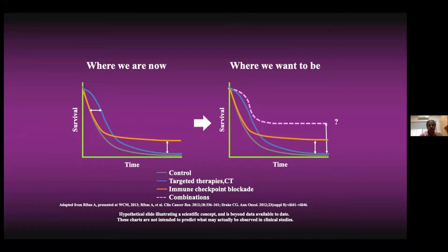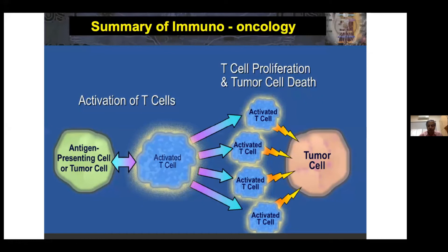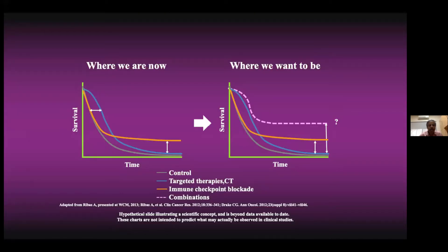This slide shows how we are trying to leverage the advantages of immunotherapy. On the left side we have the advantages seen with chemotherapy and targeted therapy. The orange line represents what we have seen with immunotherapy. Importantly, the tail of this curve runs parallel to the x-axis, meaning there are patients who survive for long periods of time — showing that responses with immunotherapy are prolonged.